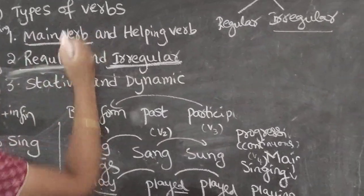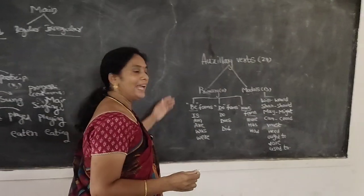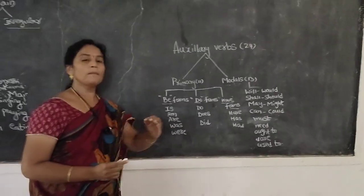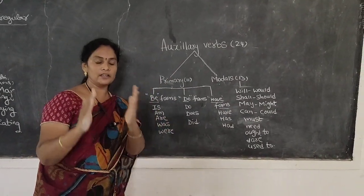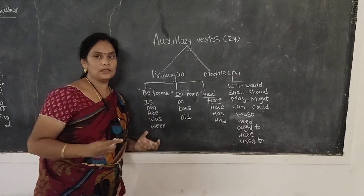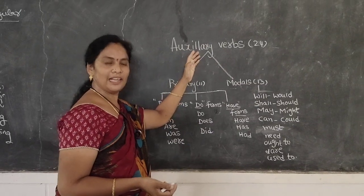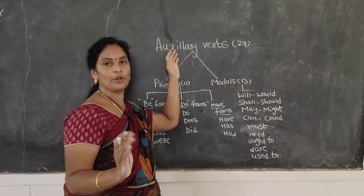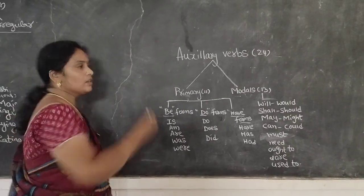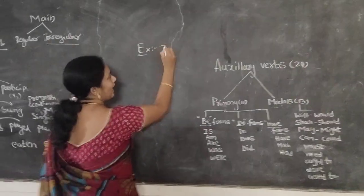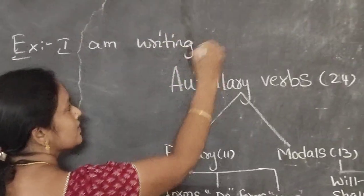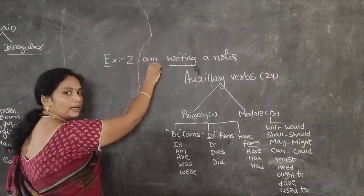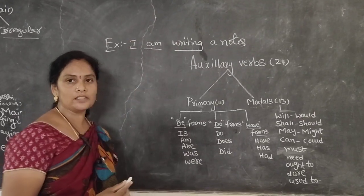This is about the main verb. Coming to the helping verb — we call it an auxiliary verb. Why are we calling it a helping verb? Because this verb cannot stand alone. Auxiliary verbs — that means helping verbs — are dependent verbs. For example, if someone asks: what are you doing? We will say: I am writing a note. Here 'writing' is the main verb and 'am' is the helping verb. It depends on the main verb 'writing'.